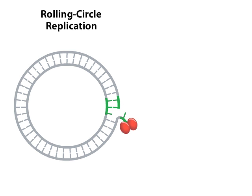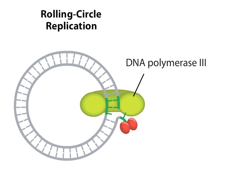REPA nicks one strand of the DNA and holds on to the 5' end of the strand. The 3' end, with its free hydroxyl group, serves as a primer for a host DNA polymerase to begin to replicate the intact complementary strand.